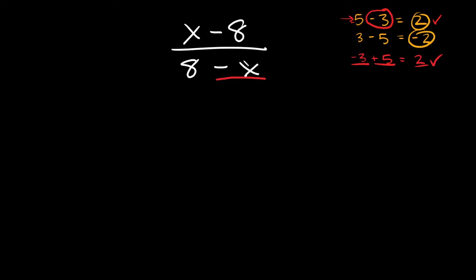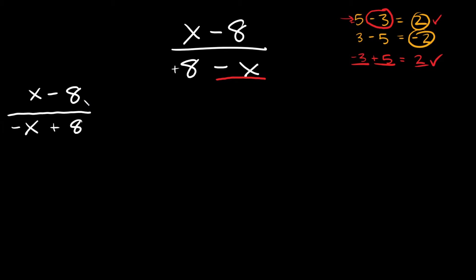Here we have a negative x on the bottom, so we'd have to write it as negative x and then, since 8 is positive, we put plus 8. So the bottom becomes negative x plus 8. And on top we still have x minus 8.